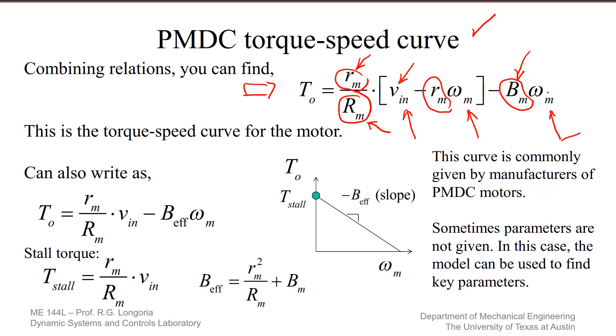This speed, by the way, in this case, would be considered known as an input. For example, it might come from solving for the dynamic state of the inertia. That would give us omega, and then we could calculate the torque if we knew the voltage. So that's the usefulness of this steady state torque speed curve.